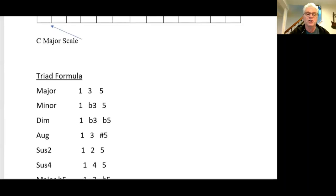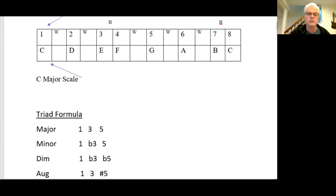The diminished is a one flat three flat five. So in C diminished would be C, E flat, and G flat. Augmented is a one, three, sharp five. C, E, here's our G, and then we sharp it. So sharp five.